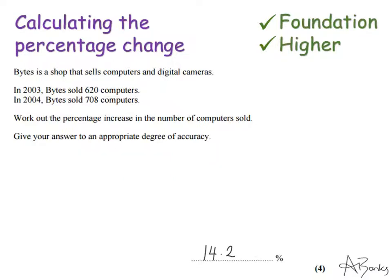Once I've got my answer, there's actually a way I can check I've done it right. I'm saying that from 620 computers in 2003, it increased by 14.2% to get to 708. So if I work out what 14.2% of 620 is and add this on, I should get roughly 708. I might not get it exactly because I did round the answer. I'm going to use a multiplier—this is the easiest way to do it. I'm going to take my 620 and multiply by...